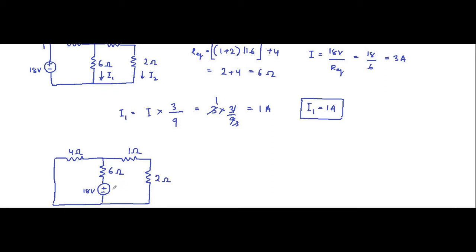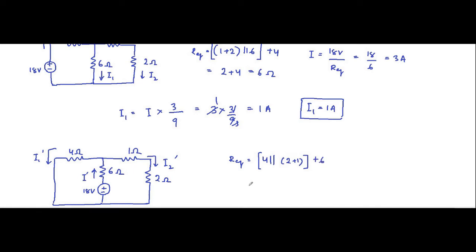Let us assign currents: the current flowing here is I dash, here it is I1 dash, and here it is I2 dash. We are particularly interested in finding I1 dash. The equivalent resistance with respect to the 18 volt voltage source present in the second branch: 4 ohm and 2 plus 1 ohm are in parallel, and the resultant is in series with 6 ohm. So it is 4 parallel with 3, plus 6.